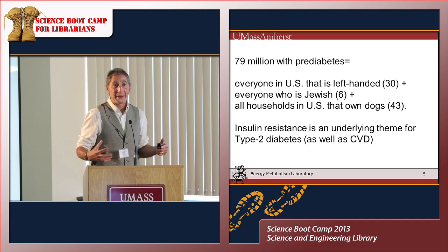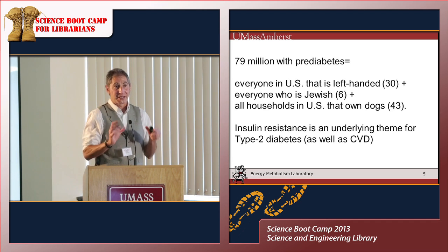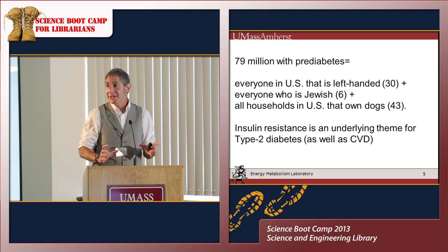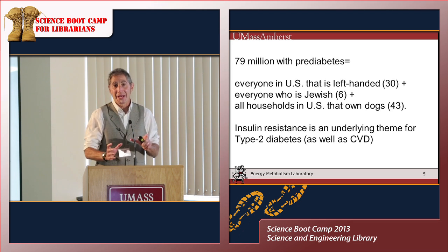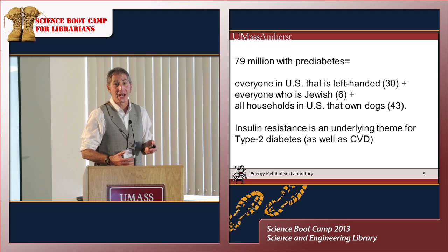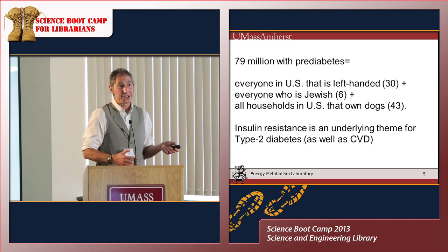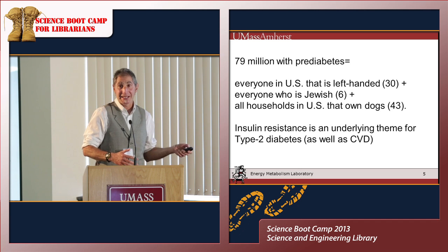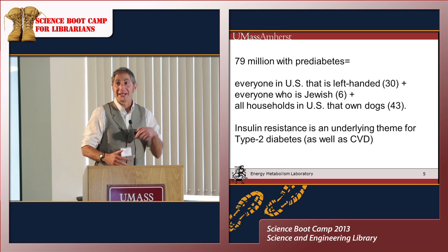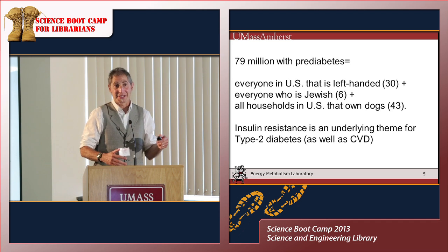The key to cardiovascular disease and diabetes is really an underlying biochemical theme, and that is insulin resistance — which some people call Syndrome X or metabolic syndrome. It's all wrapped around this common physiological problem that really explains a lot of the connection between obesity, diabetes, and cardiovascular disease.